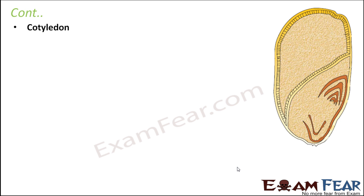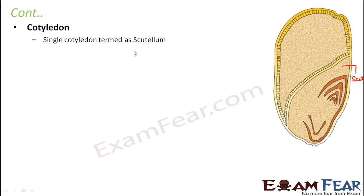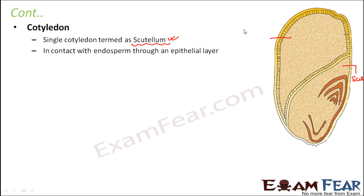The next part is the cotyledon, which is again nothing but the seed leaf. In a monocot seed there is a single cotyledon, which is also known as the scutellum. The cotyledon is in contact with the endosperm through an epithelial layer. So if you see here, the endosperm and cotyledon are connected to each other through this epithelial layer visible in the diagram.